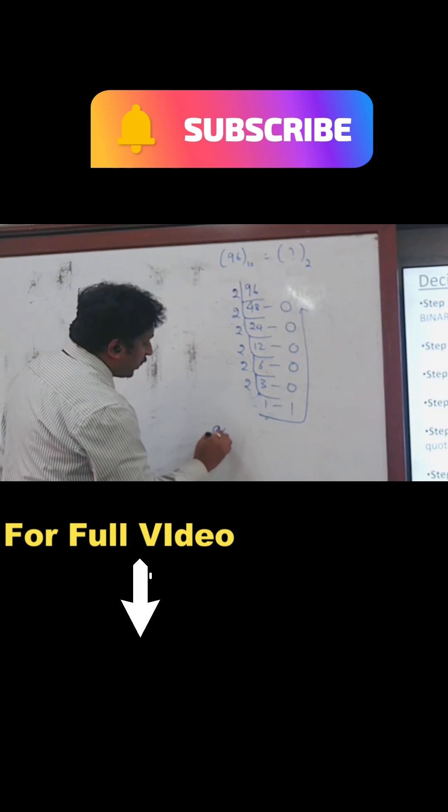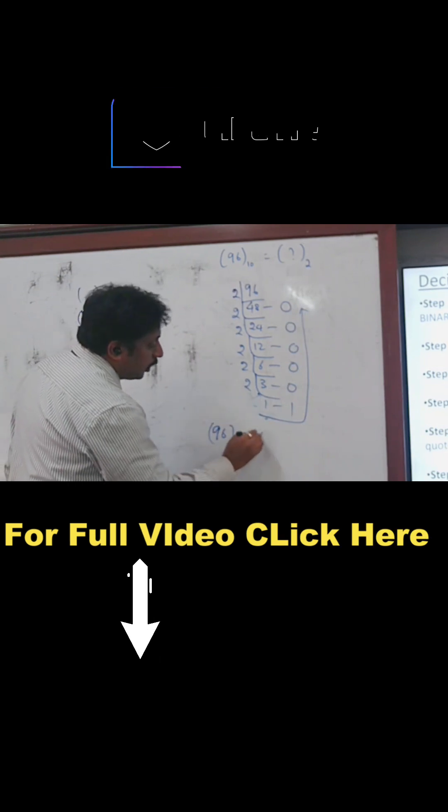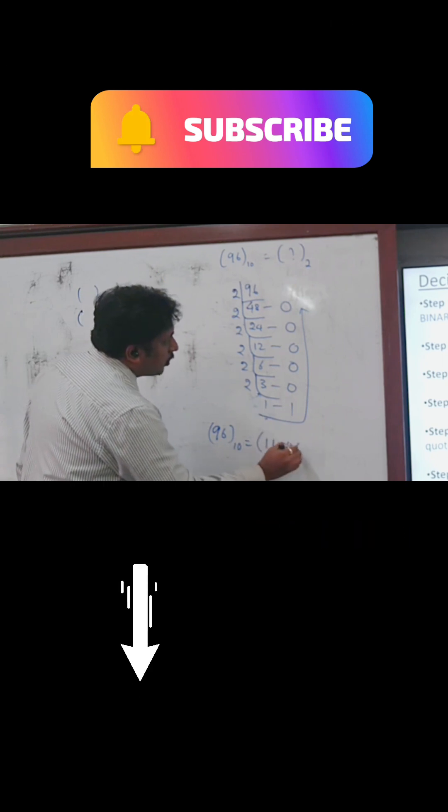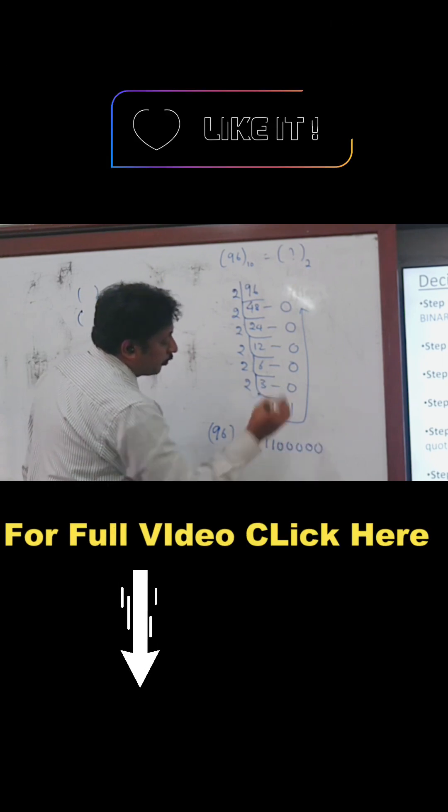That means 96 to the base 10 is equal to 1, 1, 0, 0, 0, 0, 0.